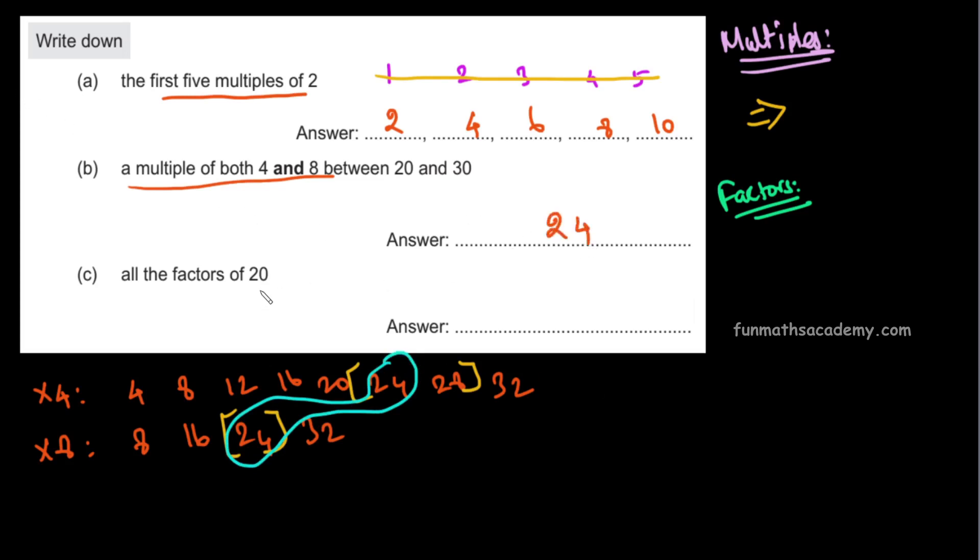Now all the factors of 20. Factors are numbers that divide one number exactly. That's the divisor that gives remainder 0. If you divide with remainder 0, that divisor is a factor.